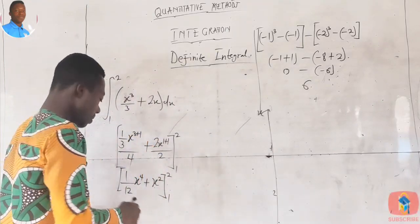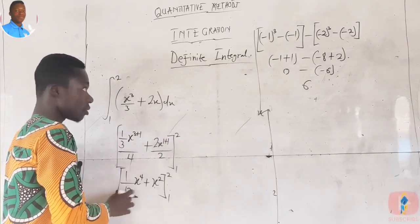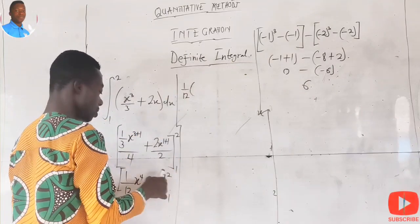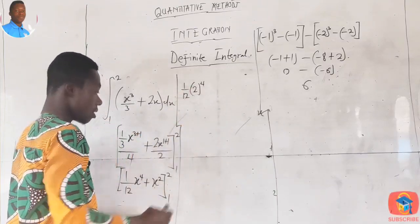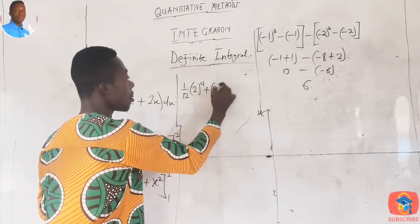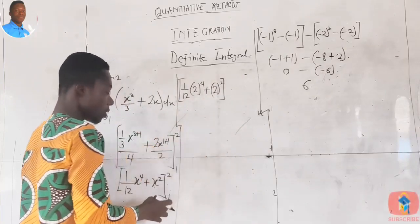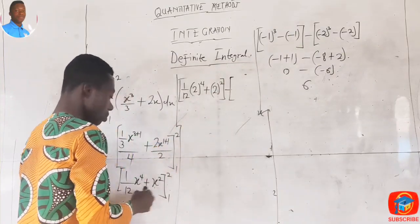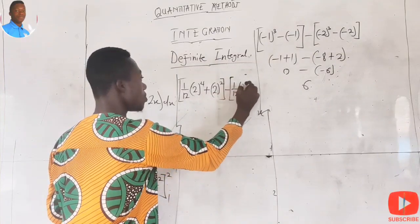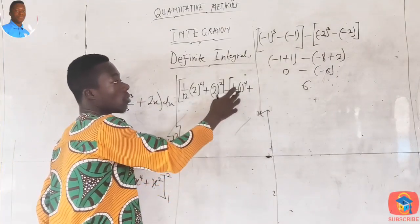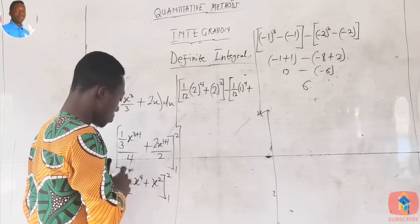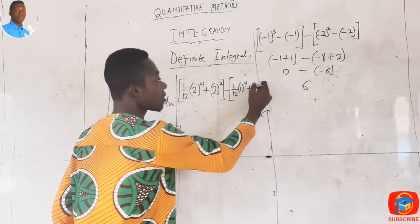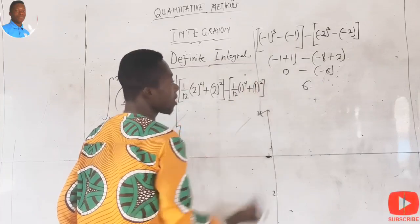We substitute two: (1/12)(2⁴) + (2²) = (1/12)(16) + 4 = 16/12 + 4. Then we substitute one: (1/12)(1⁴) + (1²) = 1/12 + 1. So we compute (16/12 + 4) minus (1/12 + 1).